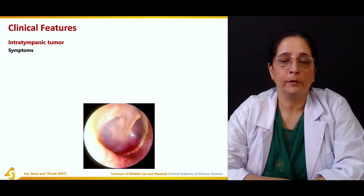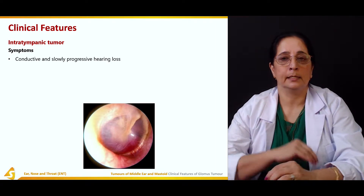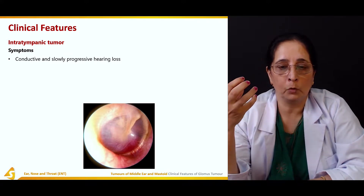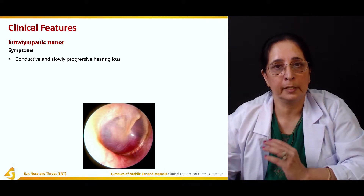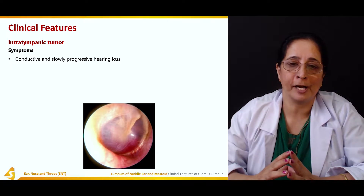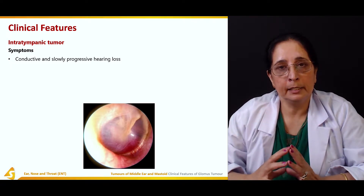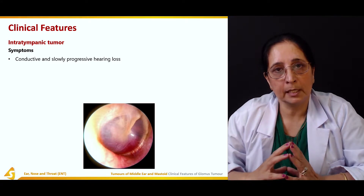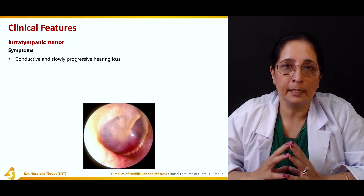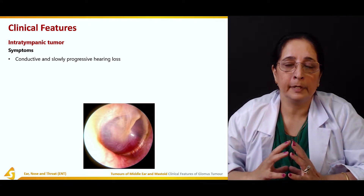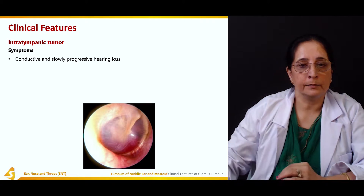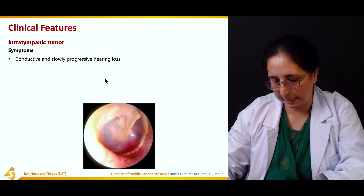The intratympanic tumor is present in the middle ear cavity as a growth mass. It can cause conductive hearing loss, which progresses slowly and is conductive in nature because of the presence of the tumor in the middle ear, arising from the tympanic branch of the ninth cranial nerve within the tympanic cavity.